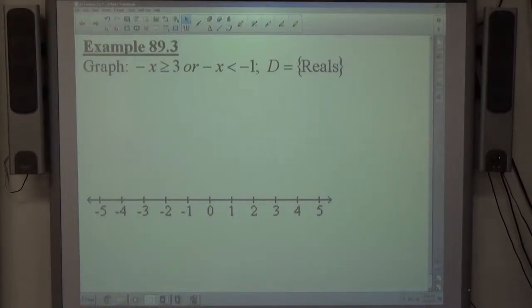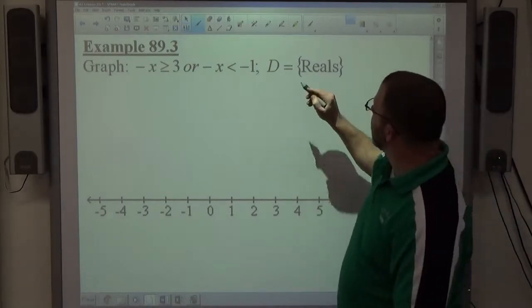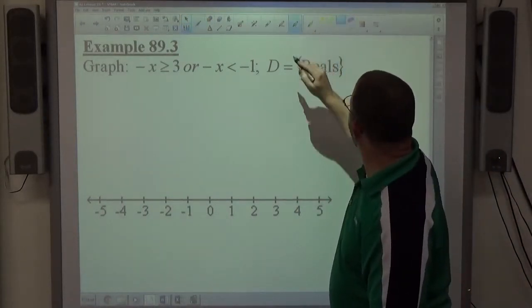Okay, example three: graph negative x is greater than or equal to three, or negative x is less than negative one.